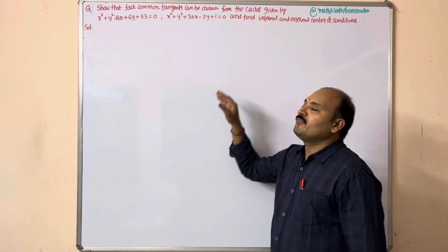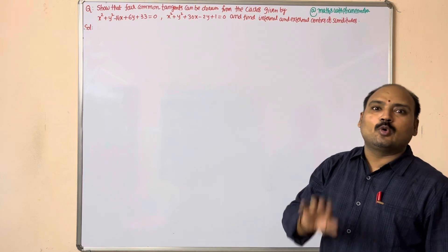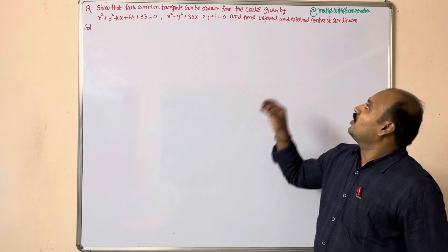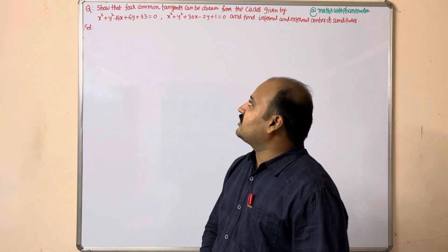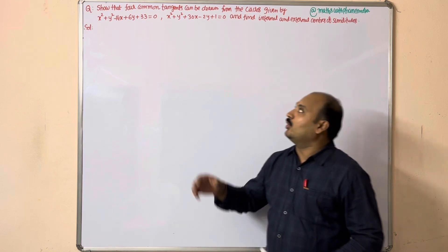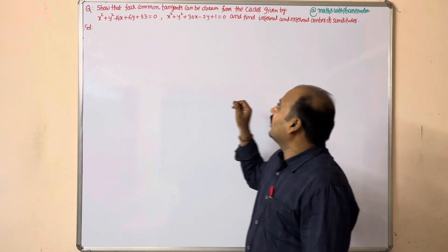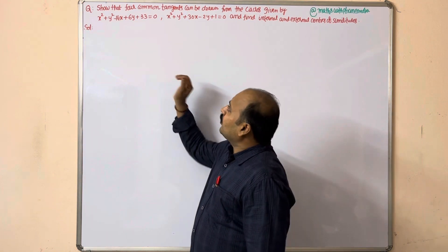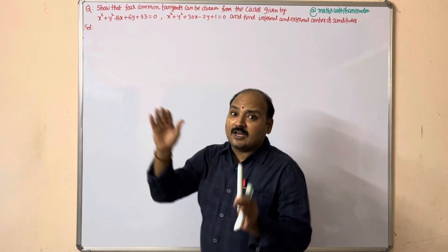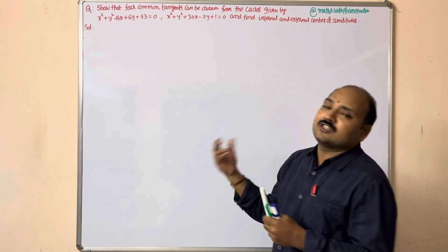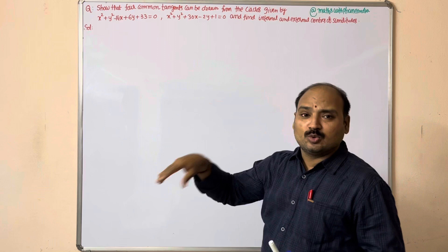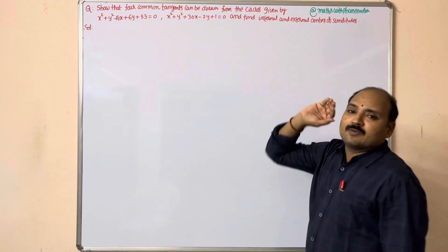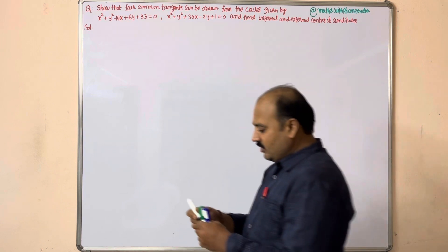Let us have a discussion. This is a 7-mark question from the year 2019 or 2020 in the TS Board of Intermediate. The question is: show that four common tangents can be drawn from the given circles x² + y² − 14x + 6y + 33 = 0 and x² + y² + 30x − 2y + 1 = 0, and find the internal and external centers of similitude. For this: three marks for proving four common tangents, two marks for internal center, two marks for external center.